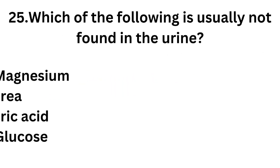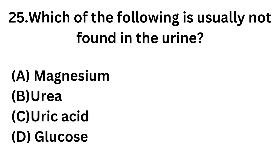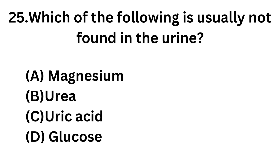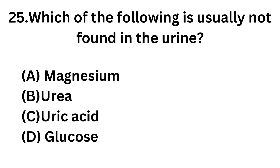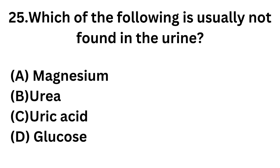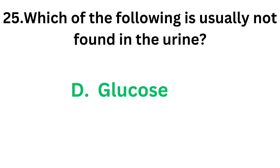Question number 25: Which of the following is usually not found in the urine? That means an abnormal content of the urine. Option A: Magnesium. Option B: Urea. Option C: Uric acid. Option D: Glucose. The component not usually found in urine is Option D, glucose. Glucose is the correct answer.